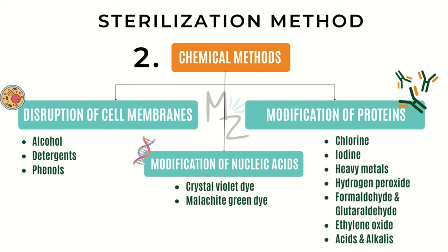Ethanol will not kill bacterial spores and therefore cannot be used for sterilization. Number two are detergents — surface-active agents composed of a long-chain lipid-soluble hydrophobic portion and a polar hydrophilic group, which can be cationic, anionic, or non-ionic. They interact with the lipid in the cell membrane through their hydrophobic chain and with surrounding water through their polar group, thus disrupting the membrane.